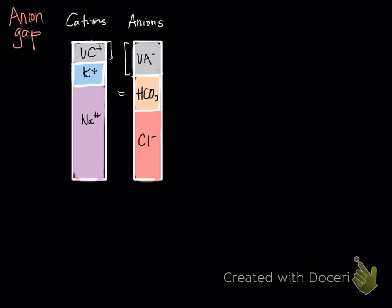It's not that unmeasured cations and unmeasured anions are abnormal, it's just that there's many positive things in the body that are positively charged that aren't actually within what is going to be our anion gap calculation.